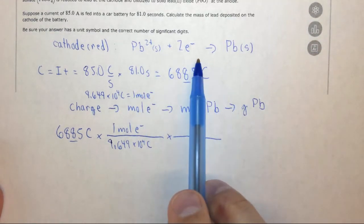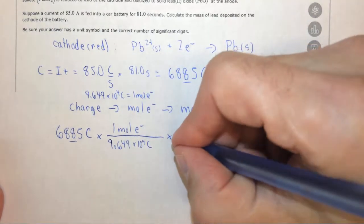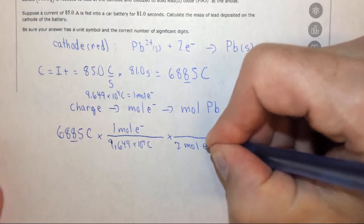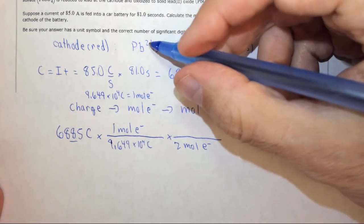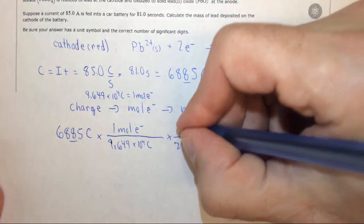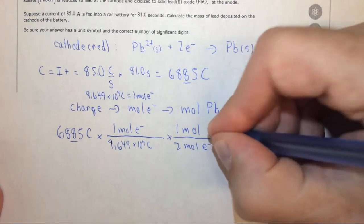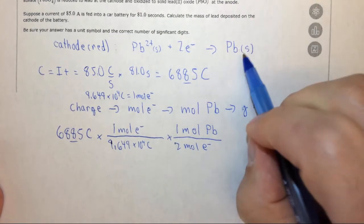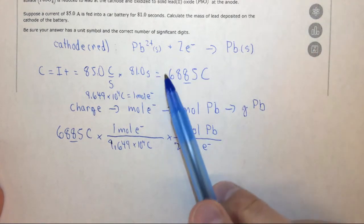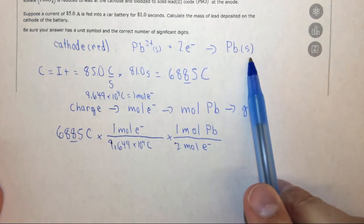Well if we look at our balanced chemical equation, 2 moles of electrons will be used to reduce 1 mole of lead 2 plus, but in this case it will form 1 mole of lead solid. So we're just going to put 1 mole of Pb, because this is what we're going after. So essentially 2 moles of electrons forms 1 mole of lead solid.